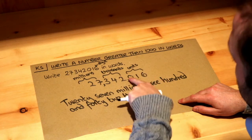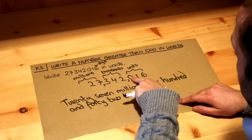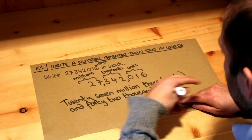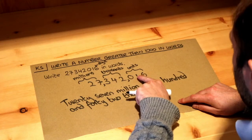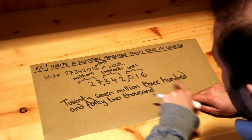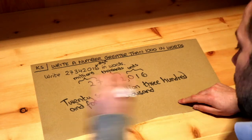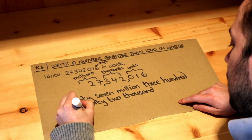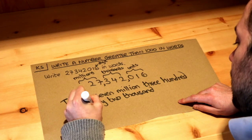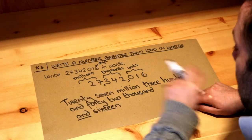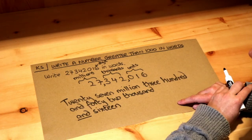Finally we see how many units we have. We just read off this number without saying thousand, hundreds, or millions after it. We've got 016 — well, that's just 16. So we write: and sixteen. And that's it.